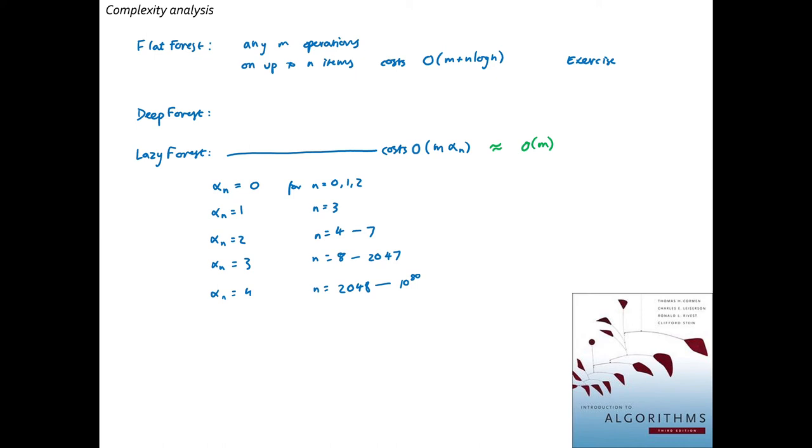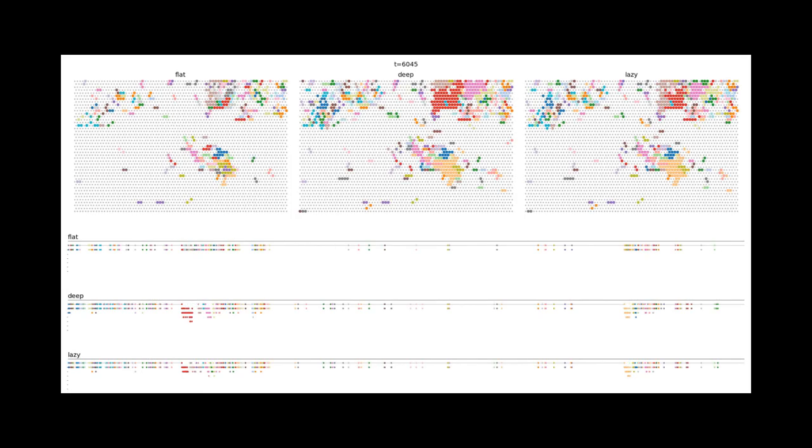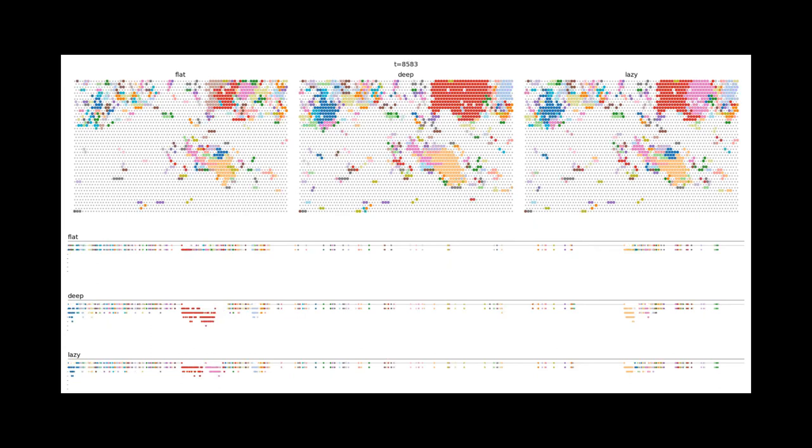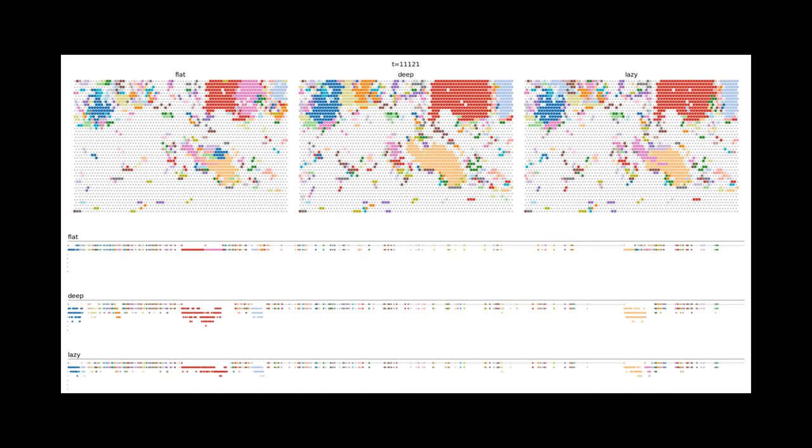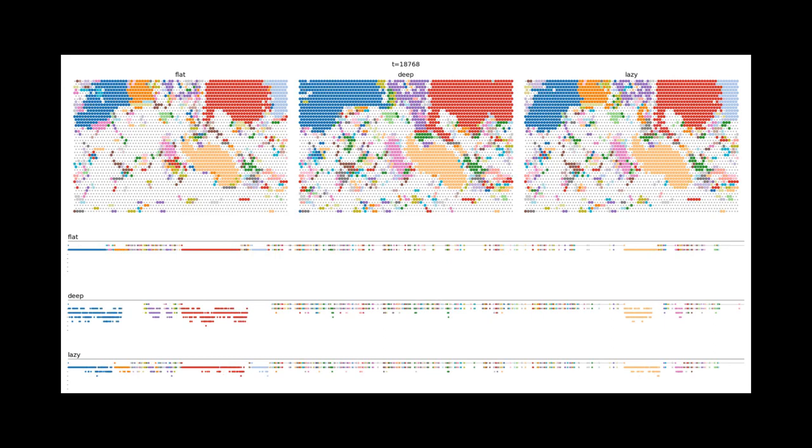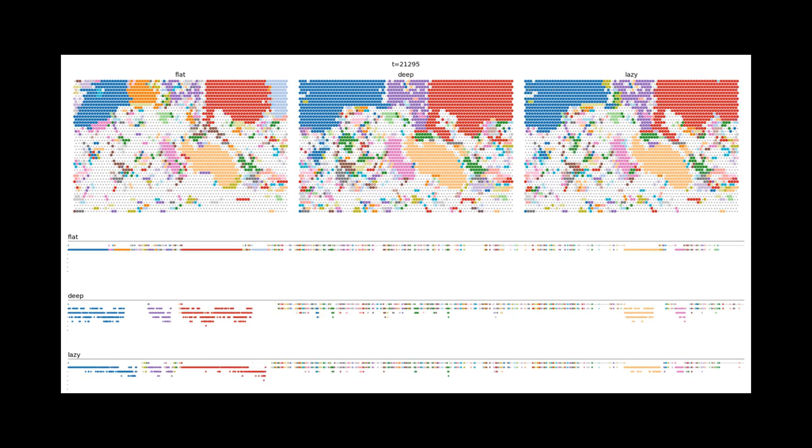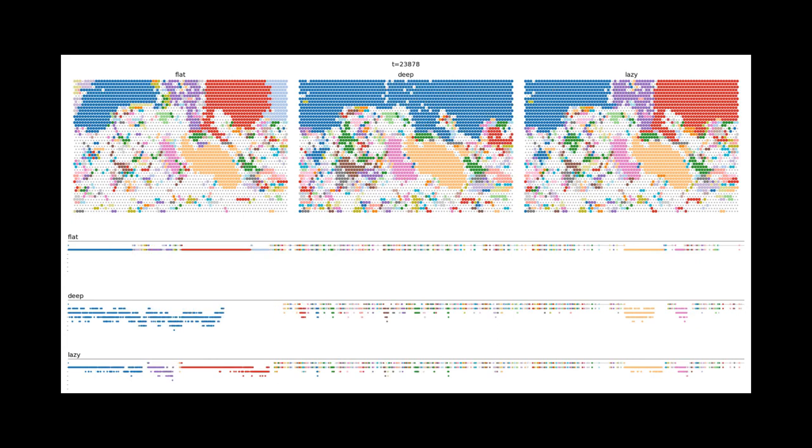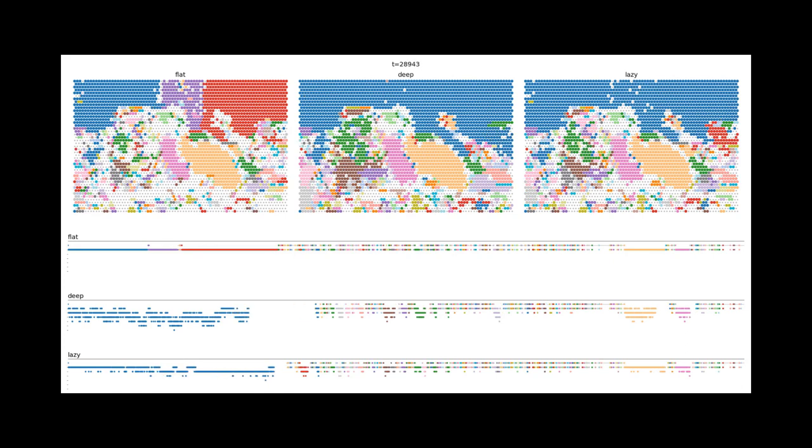Let's have a look at how these three implementations perform in practice. Here I'm running the same image segmentation that we saw earlier on, but with three different implementations of disjoint set. And I'm going to measure time in terms of number of pointers that have been looked up or modified.